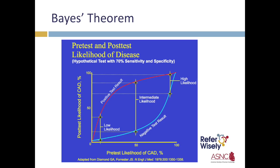To illustrate this concept, let's look at a hypothetical test which has 70% sensitivity and specificity. On the far right of the slide, where the pre-test likelihood is high, a positive test — as shown on the red curve — increases the post-test likelihood of disease to nearly 100%, making it an effective test. Equally important is the intermediate pre-test likelihood scenario, around the 50% mark. A positive test increases likelihood to over 75–80%, while a negative test decreases it to very low likelihood. In a setting like this, a diagnostic test is of great help.